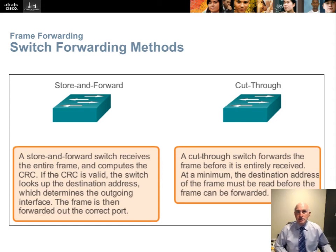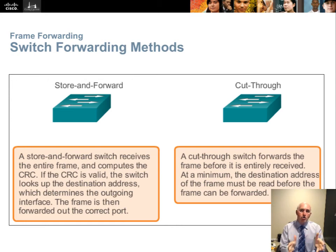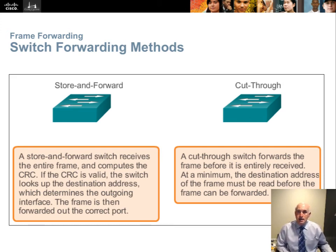Let's talk about the different forwarding methods switches can use. There are two standard methods. Store-and-forward: the switch receives the frame on the ingress port, stores the entire frame, analyzes it, does the CRC redundancy check to verify no errors, then looks up the destination in the forwarding table and moves it to the egress port. All the bits come in one by one, stored in RAM. Once they all arrive, it processes the CRC field at the end of the frame to verify the transmission. If it passes the CRC check, it forwards to the destination.